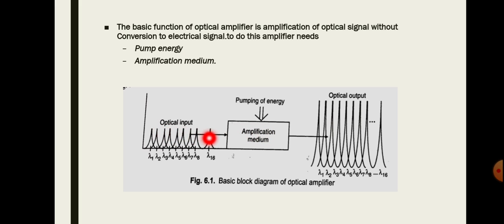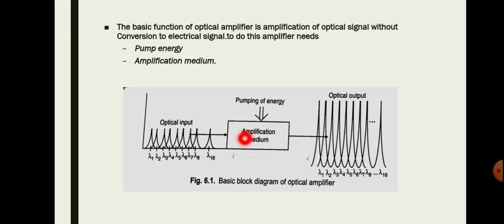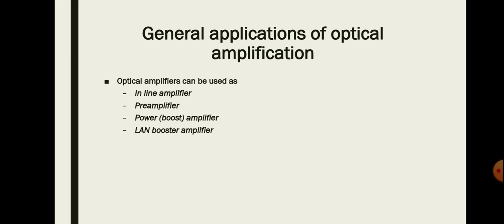When an optical signal is given to this amplifier, that light energy will be absorbed by the electrons, producing stimulated emission of light. We will go into more detail when discussing the semiconductor optical amplifier. In this block diagram, the input signal is amplified at the output side — this is the basic function of the optical amplifier.